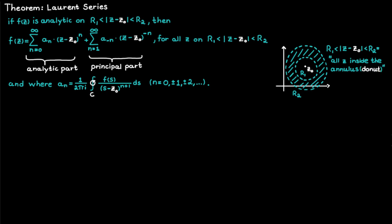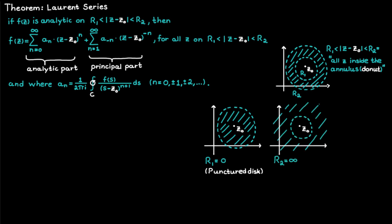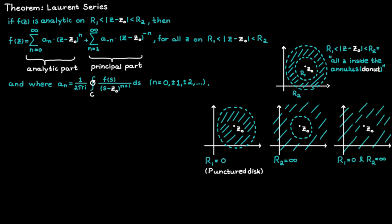An annular domain doesn't need to look like a donut. We can have one case where r1 is equal to zero — then the domain contains all the c values inside the circle r2 except c-naught. We can also have r2 equal to infinity, so the domain is all c values outside the circle r1. If both apply simultaneously, the domain includes all c values on the whole plane except c-naught. This allows us to capture isolated singularities.